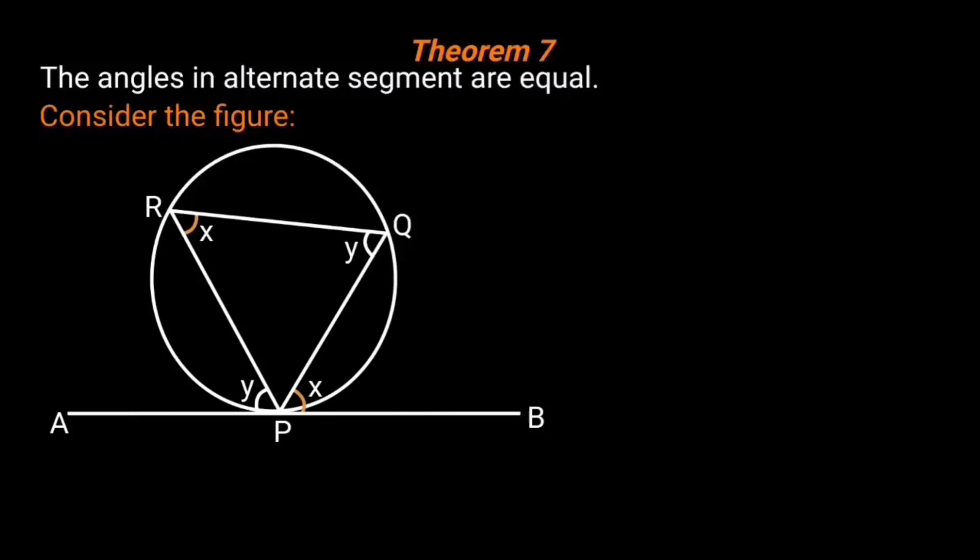In this video, we are going to look at Circle Geometry Theorem 7. The angles in alternate segments are equal. For any circle, the angle formed between the tangent and the chord at their point of contact is equal to the angle formed by the chord in the alternate segment.